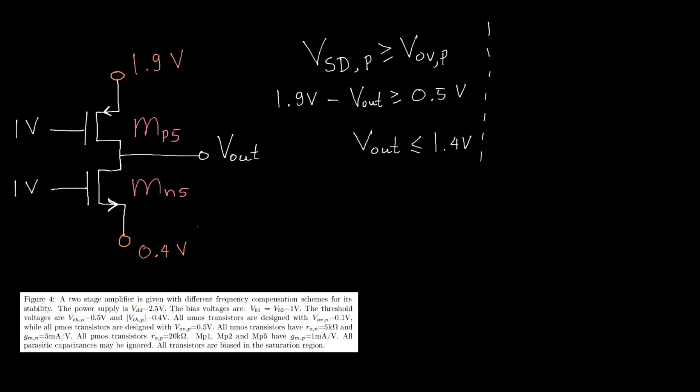And we can do the same thing for the NMOS transistor, where the drain source voltage needs to be larger than the overdrive voltage of the NMOS. The drain voltage is Vout, the source voltage is 0.4, and it needs to be larger than 0.1. So from that, you can conclude that the output voltage has to be larger than 0.5 volts.